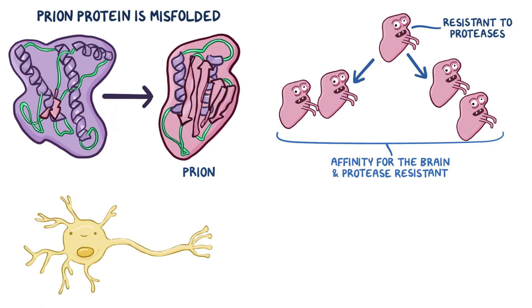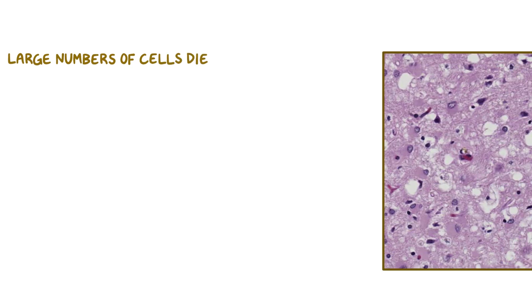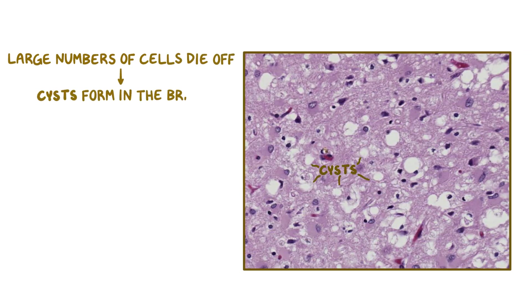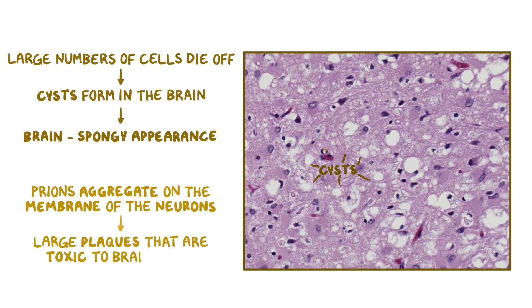These misfolded prions accumulate within the cell and trigger apoptosis, which is programmed cell death. This is done with the help of 14-3-3 protein, which is an intracellular protein that promotes apoptosis. When large numbers of cells start to die off, cysts start to form in the brain, and over time this gives the brain its spongy appearance. Additionally, the prions aggregate together on the membrane of the neurons, forming large plaques that are toxic to brain tissue.